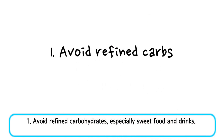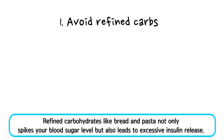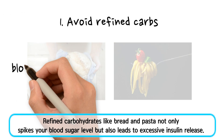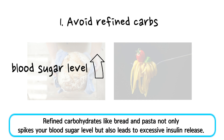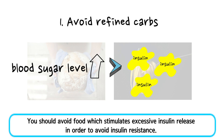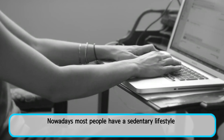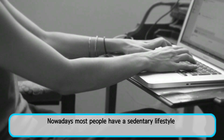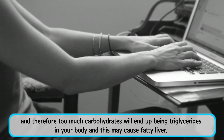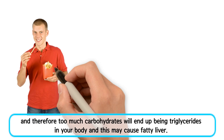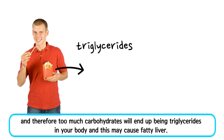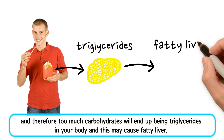First, avoid refined carbohydrates — especially sweet food and drinks. Refined carbohydrates like bread and pasta not only spike your blood sugar level but also lead to excessive insulin release. You should avoid food which stimulates excessive insulin release in order to avoid insulin resistance. Nowadays, most people have a sedentary lifestyle, and therefore too many carbohydrates will end up being stored as triglycerides in your body, which may cause fatty liver.